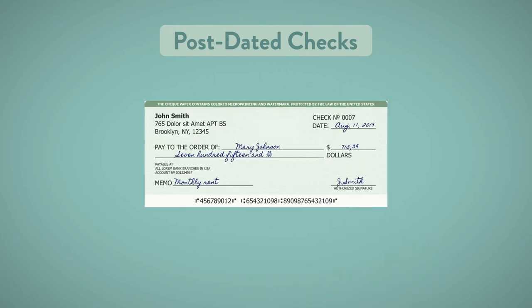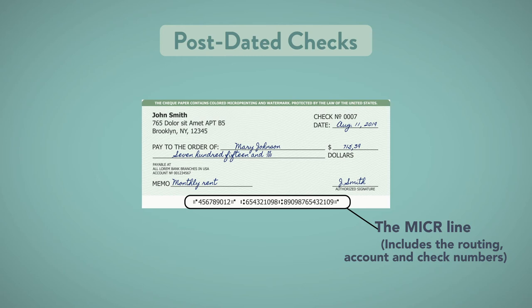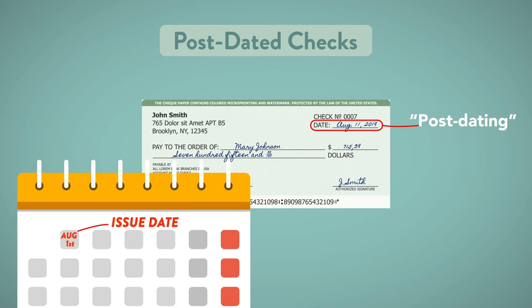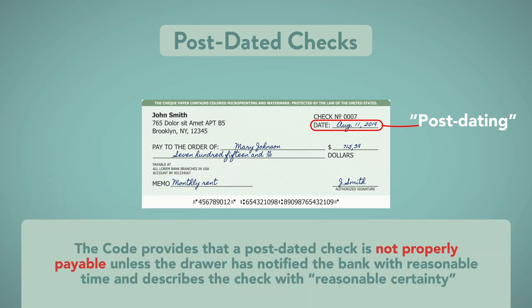Postdated Checks. Banks process large volumes of checks mechanically by using the MICR line on a check, which includes the routing, account, and check numbers. However, the date that a drawer writes on a check is not encoded on the MICR line. Sometimes a drawer will write a date on the check later than its issue so that the payee will not be able to cash the check right away. This procedure — called post-dating — allows the drawer time to ensure the funds are properly in her checking account. Nevertheless, the code provides that a post-dated check is not properly payable unless the drawer has notified the bank with reasonable time and describes the check with reasonable certainty.